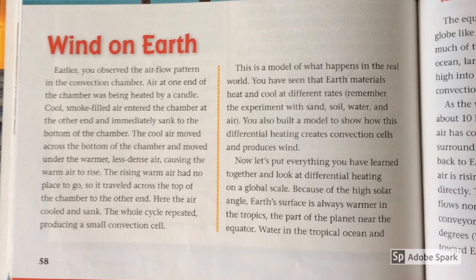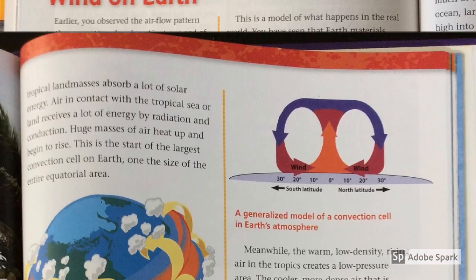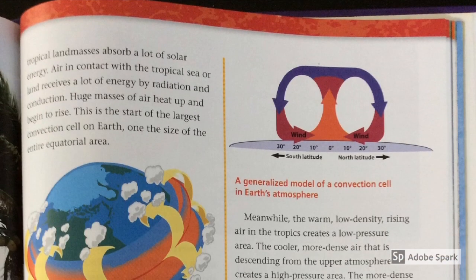Because of the high solar angle, Earth's surface is always warmer in the tropics — the part of the planet near the equator. Water in the tropical ocean and tropical landmasses absorb a lot of solar energy. Air in contact with tropical sea or land receives a lot of energy by radiation and conduction. Huge masses of air heat up and begin to rise. This is the start of the largest convection cell on Earth — one the size of the entire equatorial area.